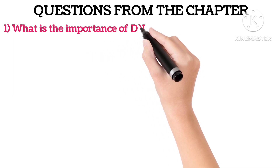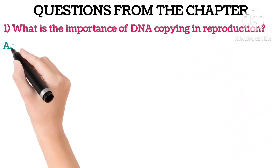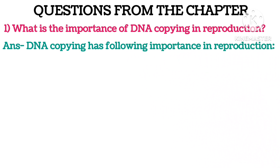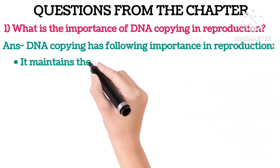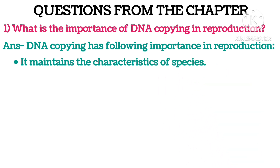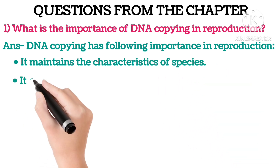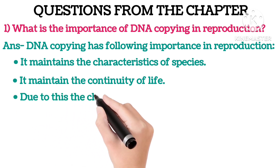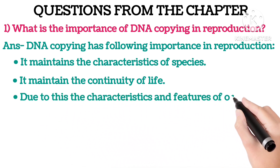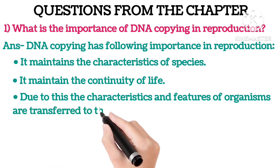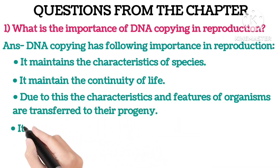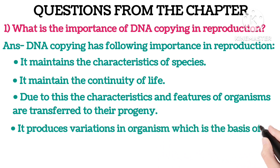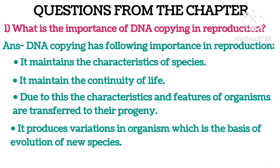First: What is the importance of DNA copying in reproduction? DNA copying has the following importance in reproduction. First, it maintains the characteristics of species. Second, it maintains the continuity of life. Third, the characteristics and features of organisms are transferred to their progeny. Fourth, it produces variation in organisms, which is the basis of evolution of new species.